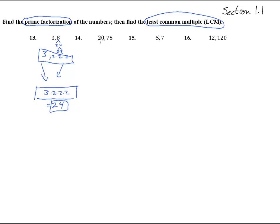Let's try the next one. 20 breaks down into 2 times 10, 2 times 5, so we get 2 times 2 times 5. And 75 breaks down into 3 times 25, and 5 times 5, so we get 3 times 5 times 5.